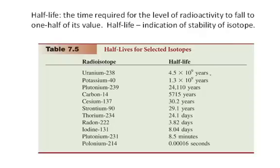Uranium-238 is 4.5 billion years, whereas polonium-214 is 0.00016 seconds. So the half-life varies widely, and the half-life of a radioisotope is an indication of the stability of the isotope. The more stable, the longer the half-life, the longer it takes for the decay to occur.